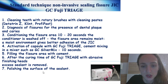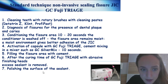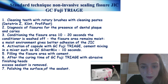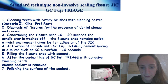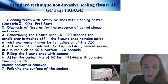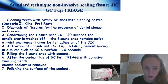When using GC Fuji Triage — a very good material — we should clean teeth with rotary brushes with pastes. Then diagnose fissures for the presence of dental plaque and caries, condition the fissure area 10–20 seconds, activate the capsule and mix the cement, then fill the fissure area with cement. After the curing time, finish with abrasive finishing heads and polish the surface of sealants.